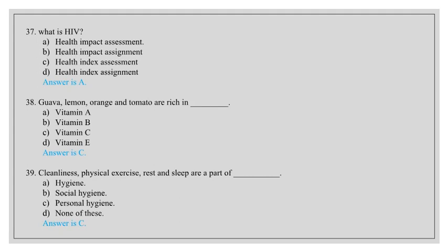Guava, lemon, orange and tomato are rich in vitamin A, vitamin B, vitamin C, vitamin E. Answer is C, vitamin C. Cleanliness, physical exercise, rest and sleep are a part of hygiene, social hygiene, personal hygiene, none of these. Answer is C, personal hygiene.